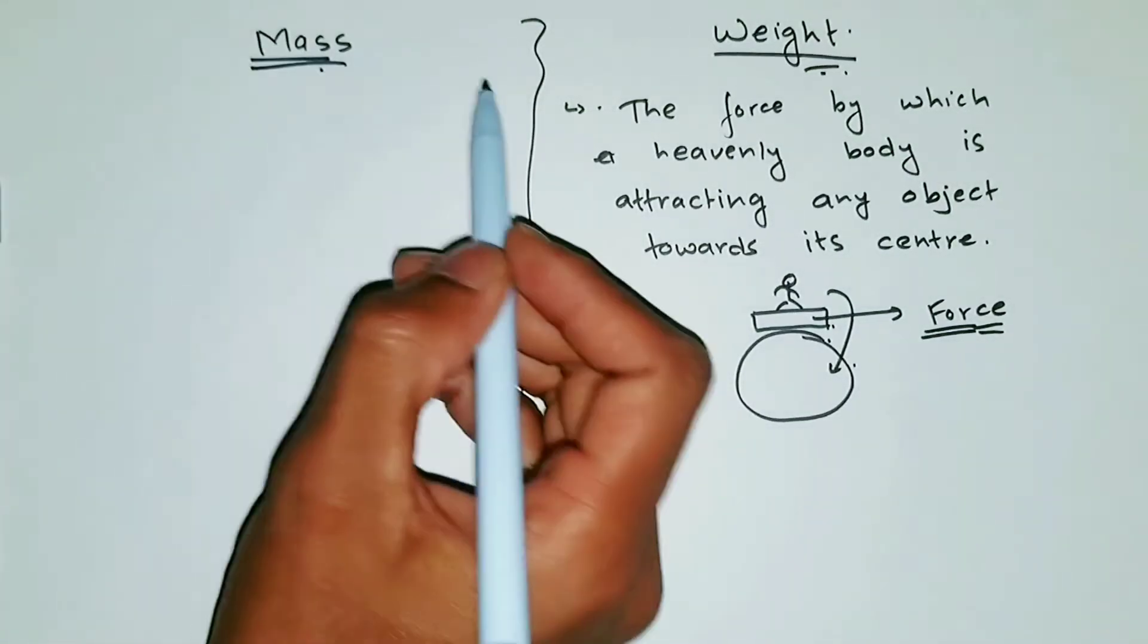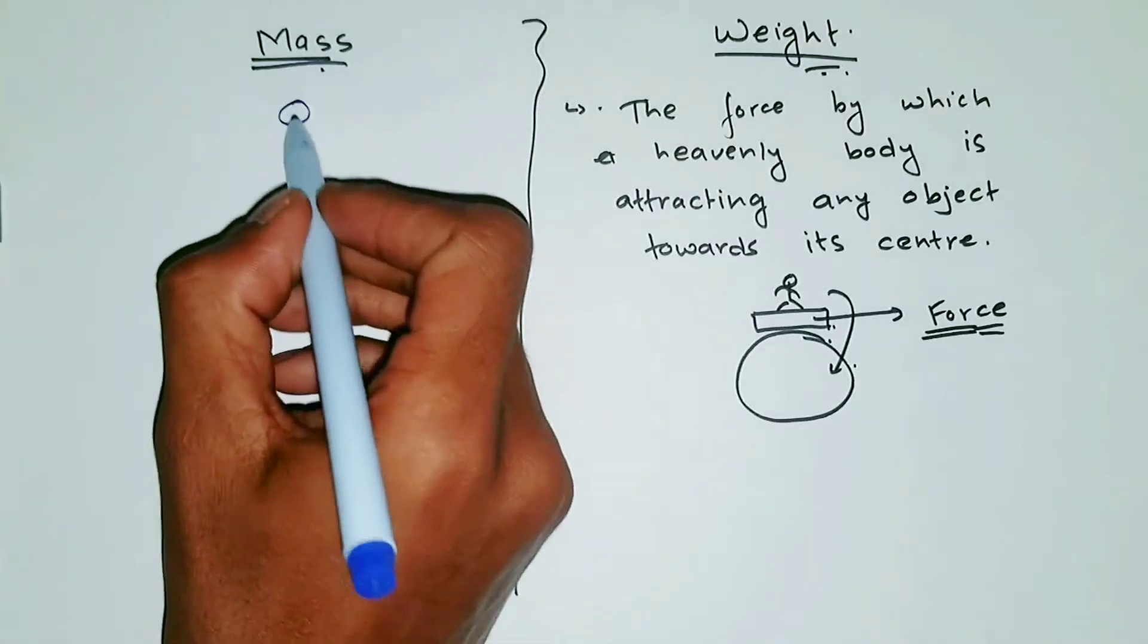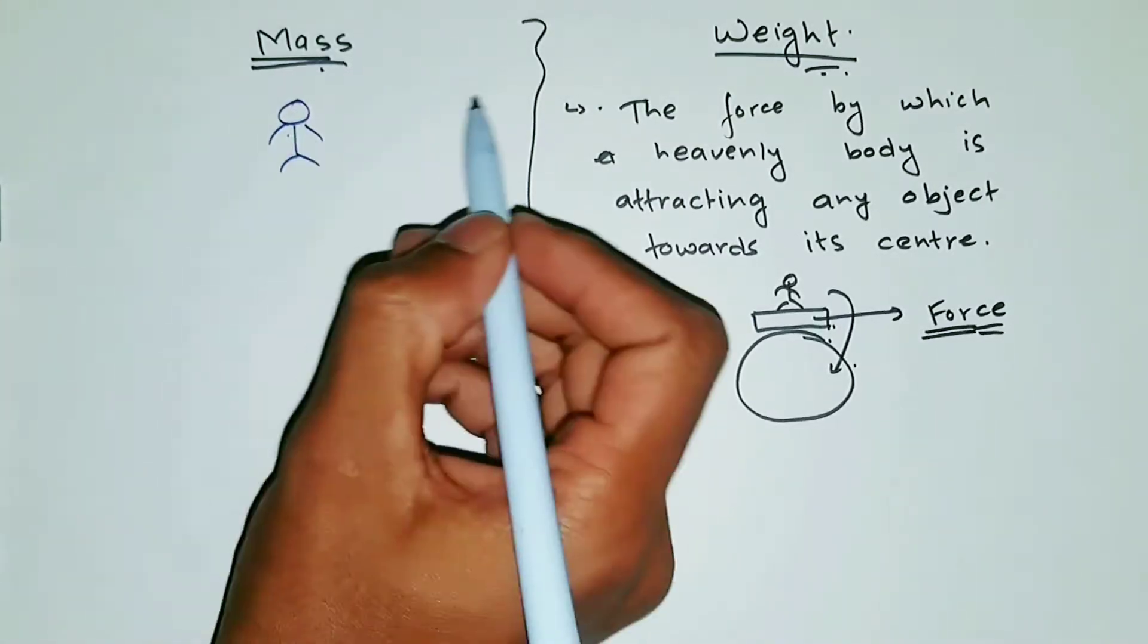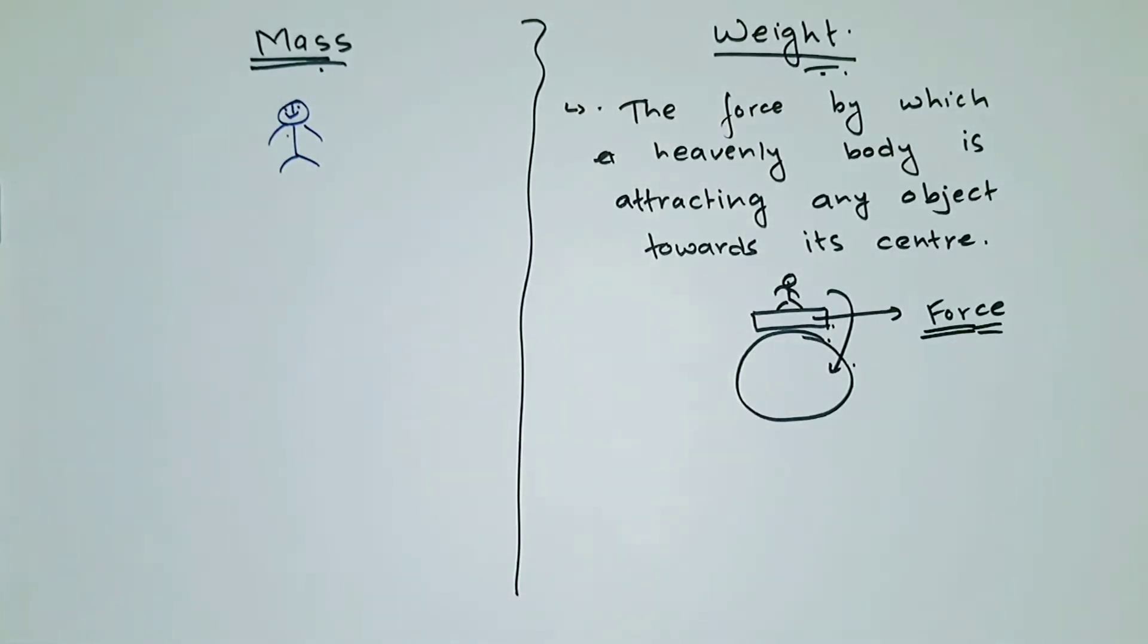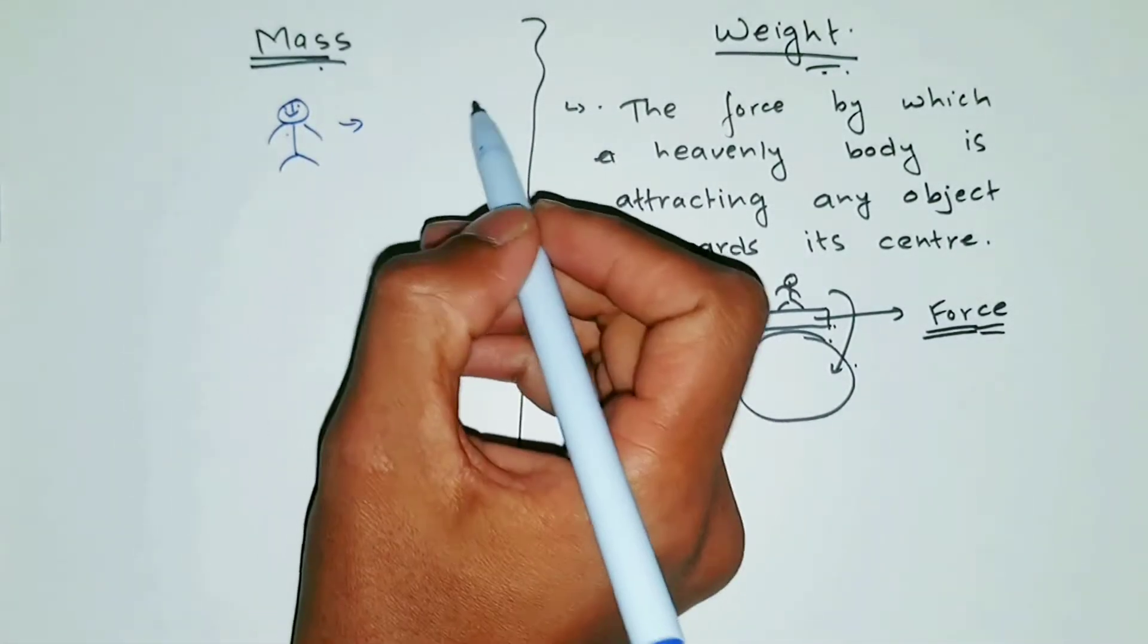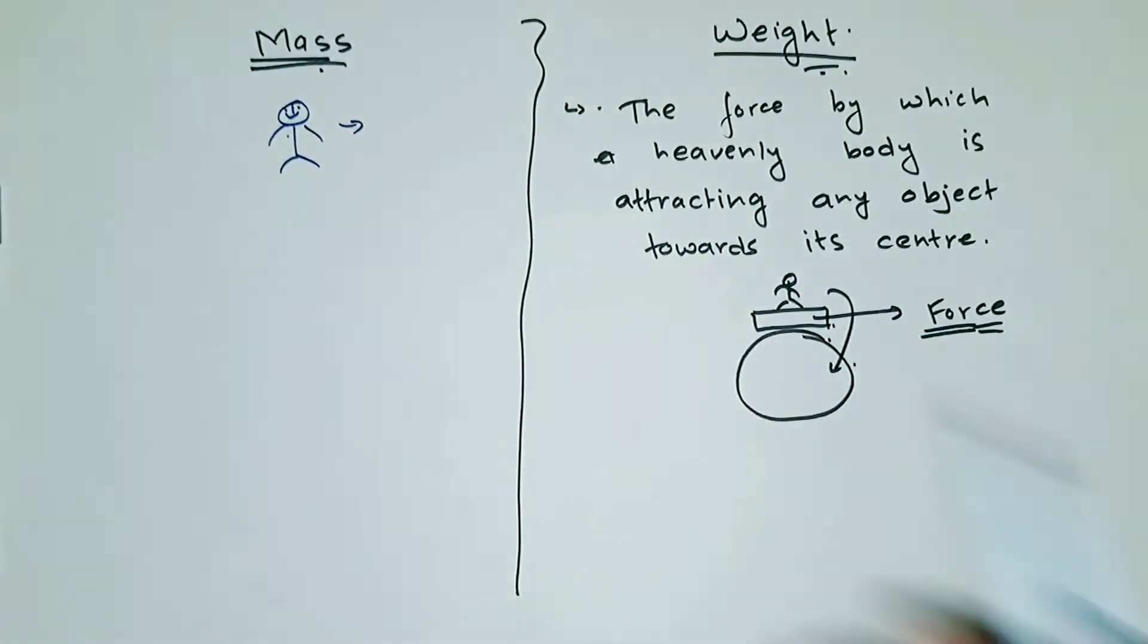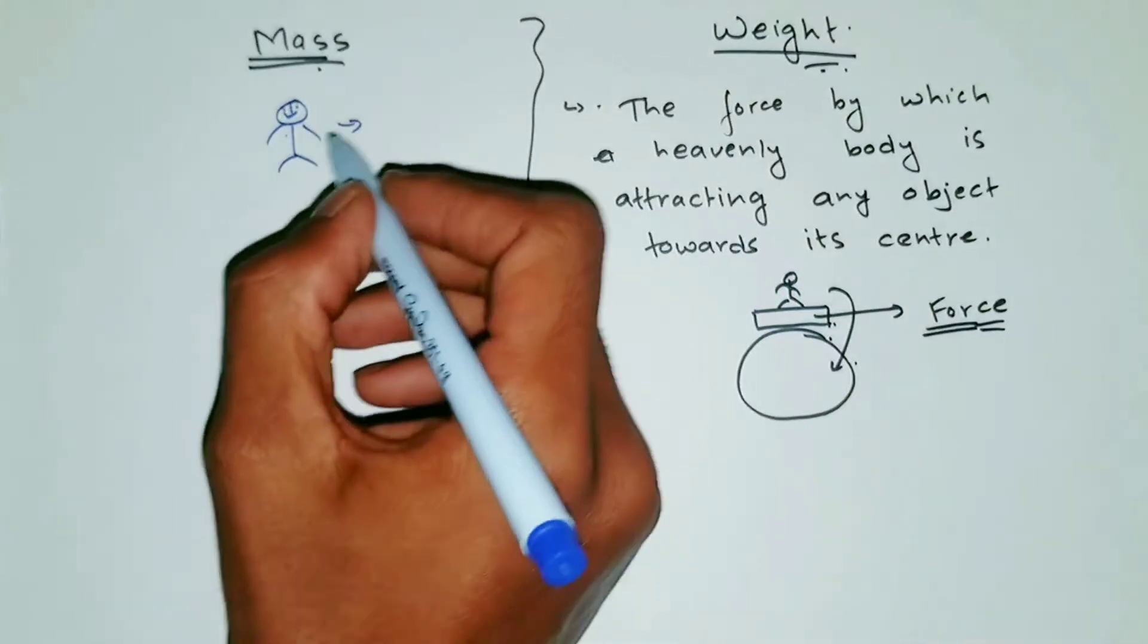Mass is completely different from weight. So let's say there is a human body, or let's say this is you, or me. So there is this person. Now, we all know everything is made up of matter, or matter and energy, but for now we'll just look at matter. So this human is made up of matter.